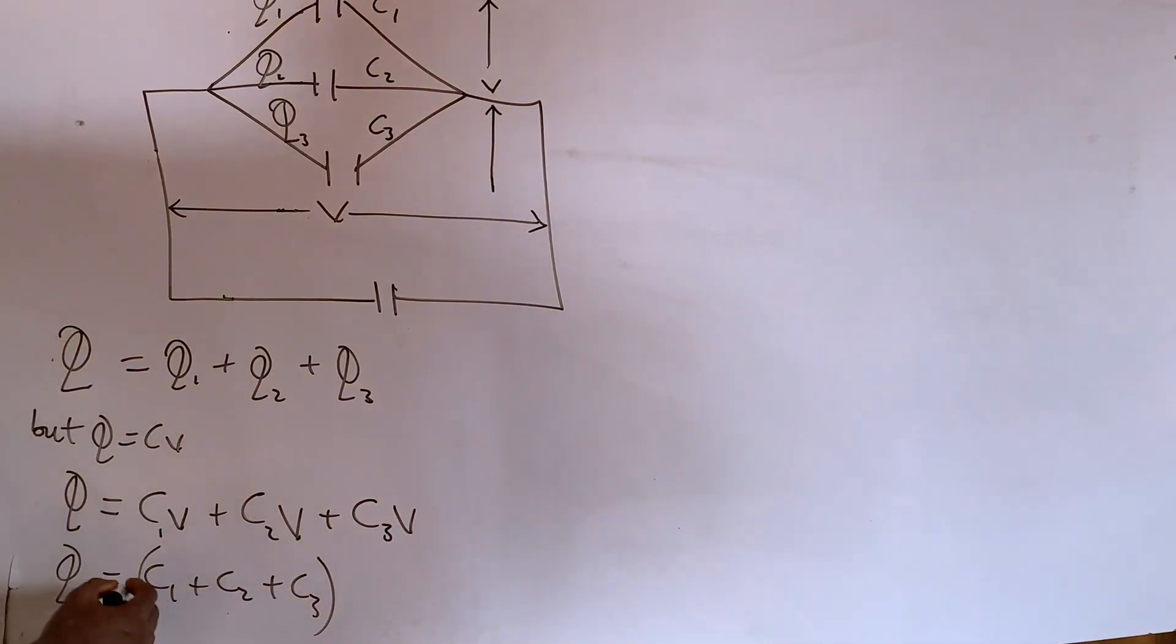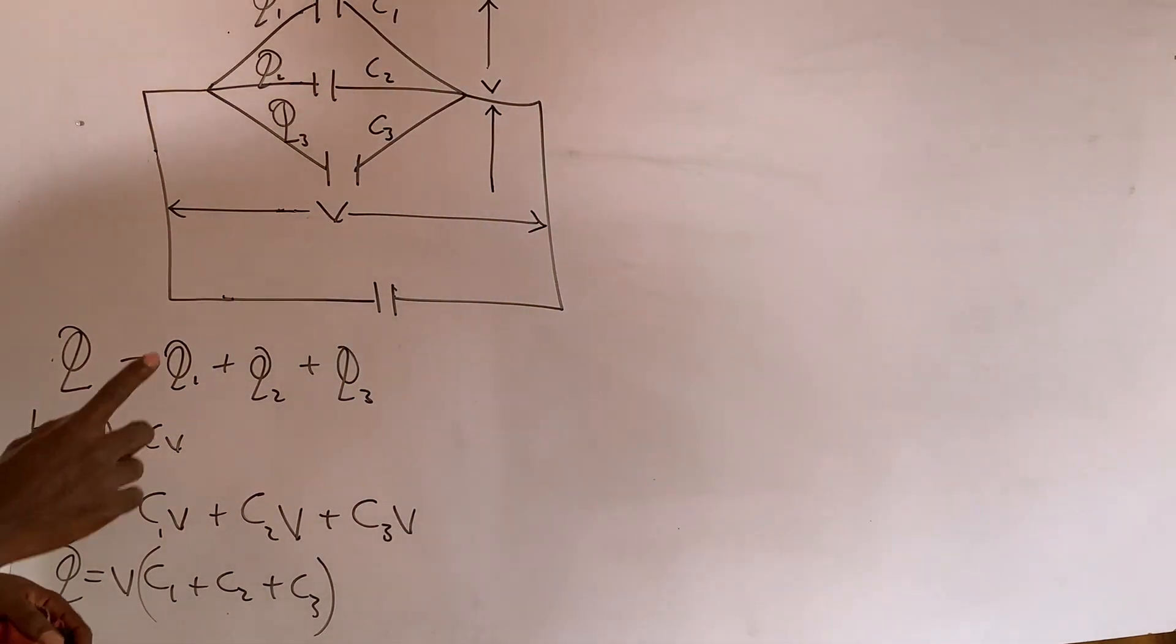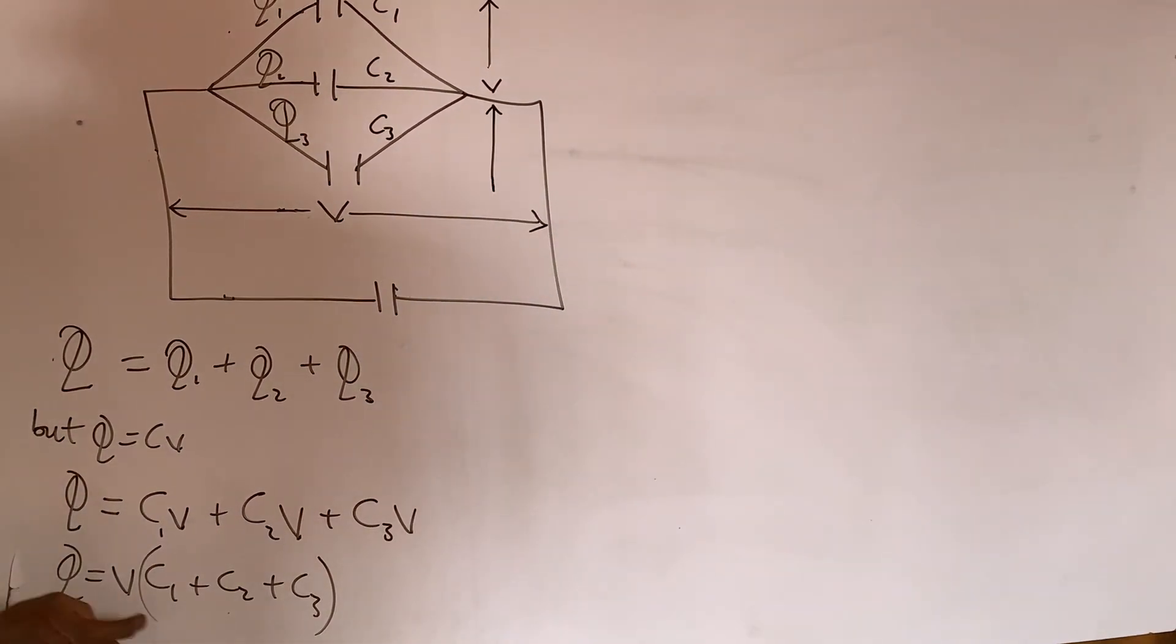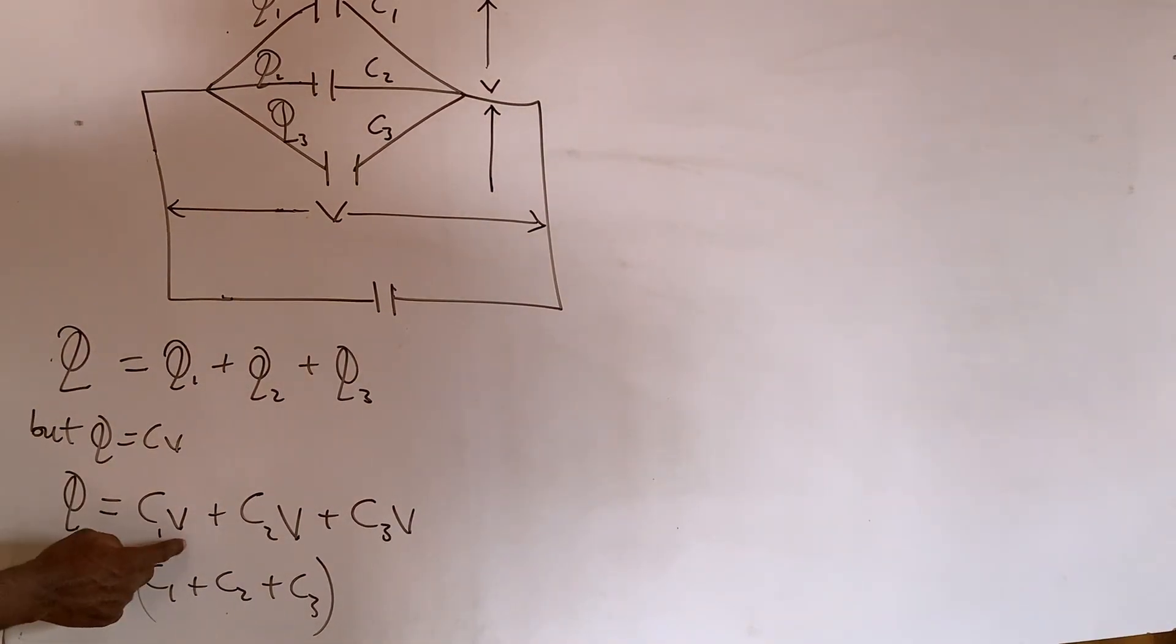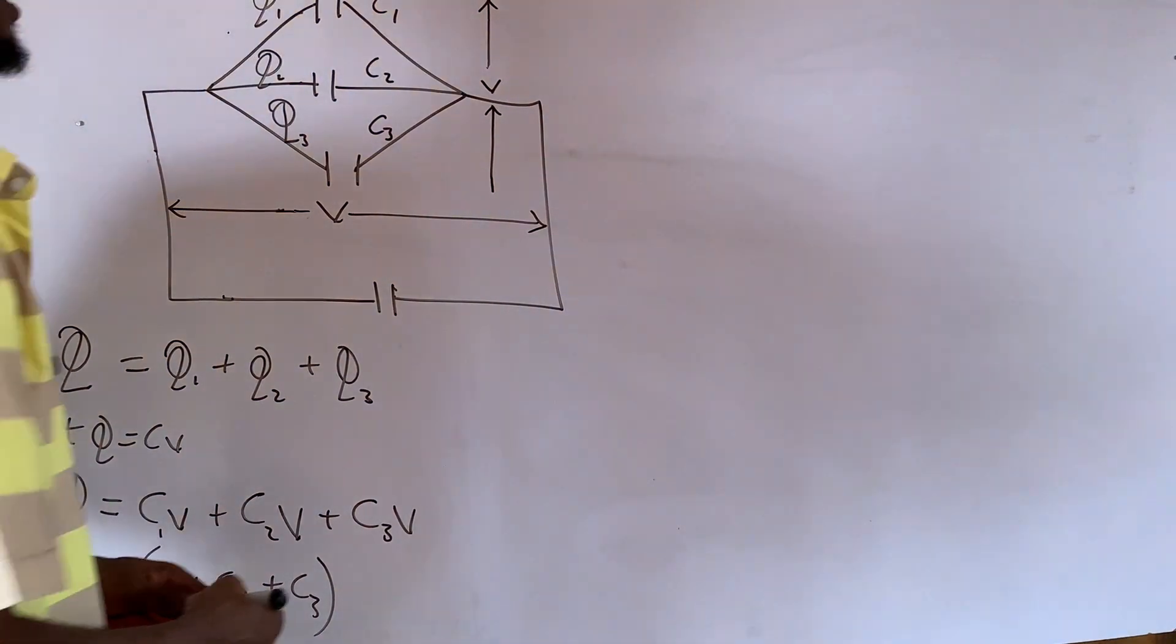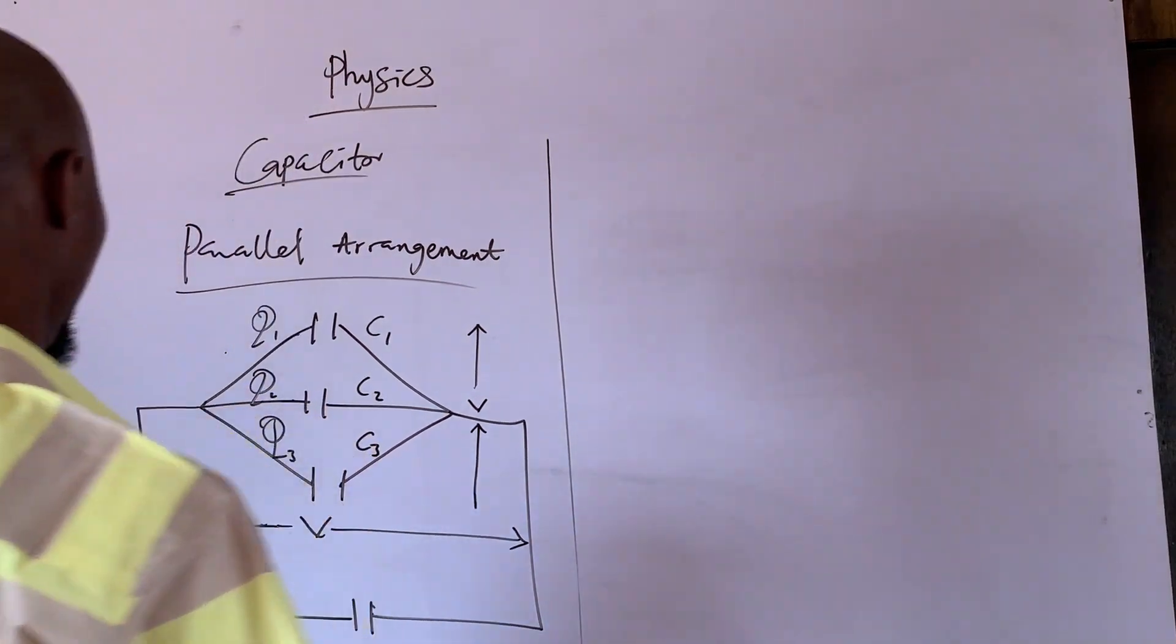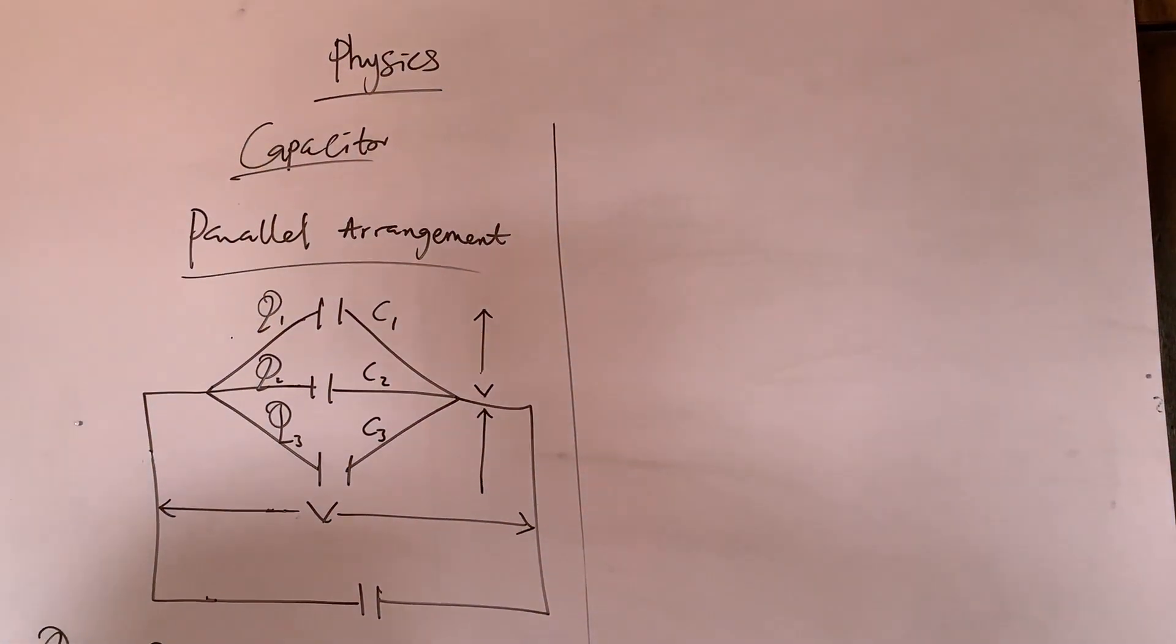But since you have V here, what do you do? Q is equals to C1 plus C2 plus C3. Either you put the V here or you put it here, but it's better you put the V here. Now in case you don't understand what I did here, I factorize. I factorize the common factor here. It is V times C1 will give us C1V, V times C2 will give us C2V, V times C3 will give us plus C3V.